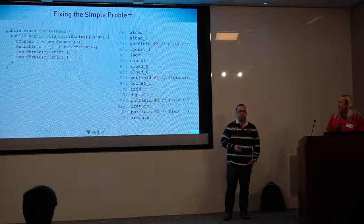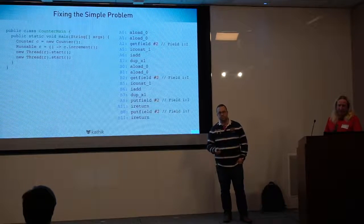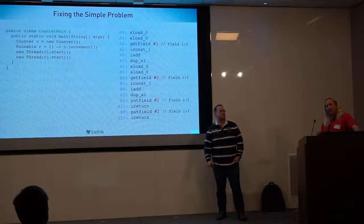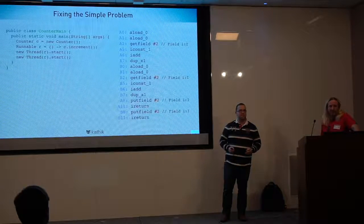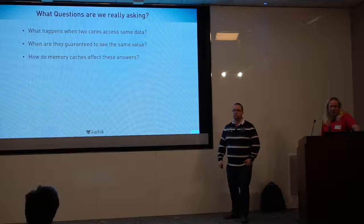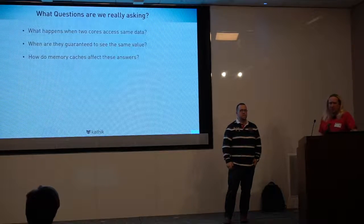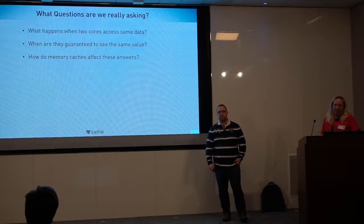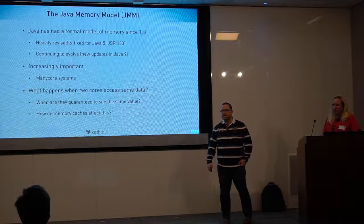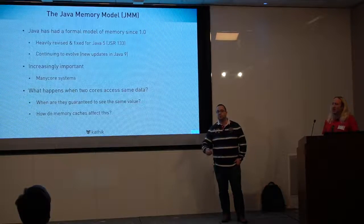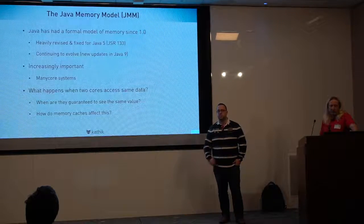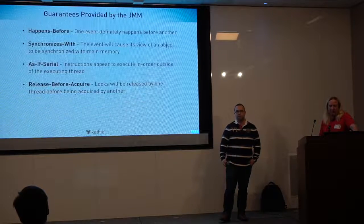As you get more cores, you get increased interleavings and more chances of things going wrong. Programs that were previously correct started failing when more cores arrived, causing interesting outages. The key questions are: what happens when two cores access the same data? Are they guaranteed to see the same value? And what happens with memory caches? That's what the Java memory model looks to solve.